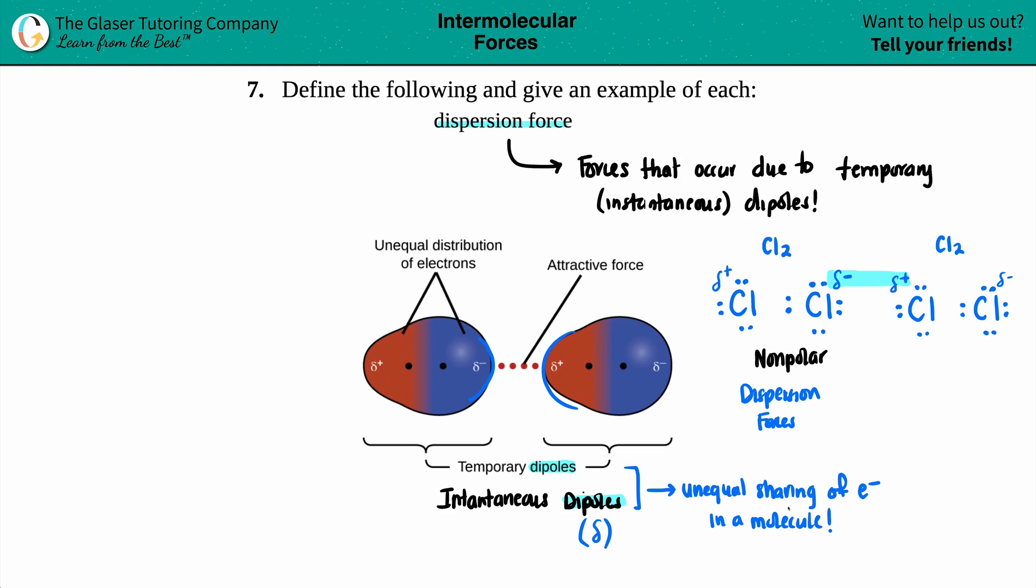So unequal sharing of electrons in a bond. But I think you get the point, what do you think? So we defined it and we gave an example. We could give an example of this and how the partial negatives always want to hook up with those partial positives. Negatives with positives, and I think we're good to go. What do you think?